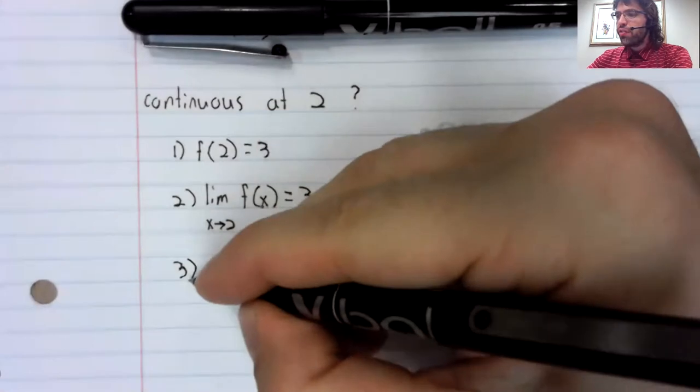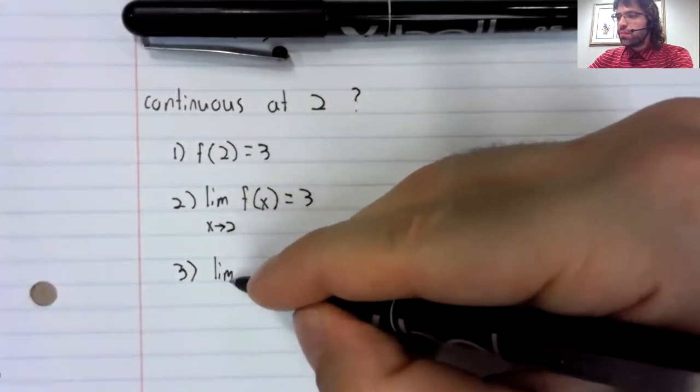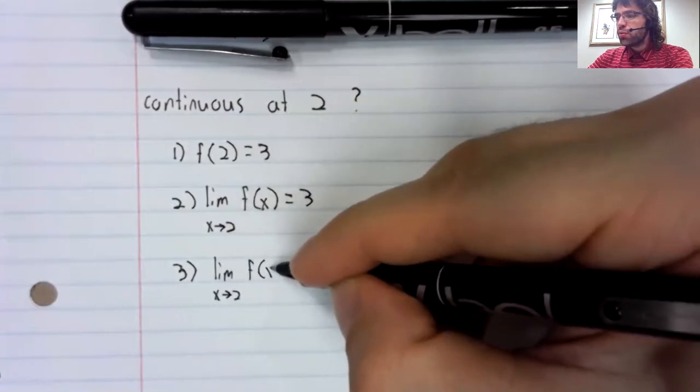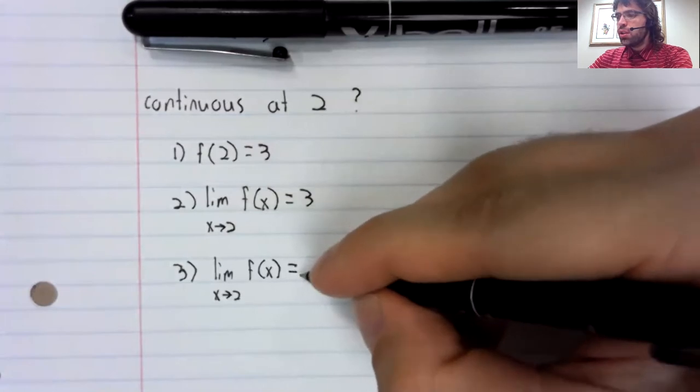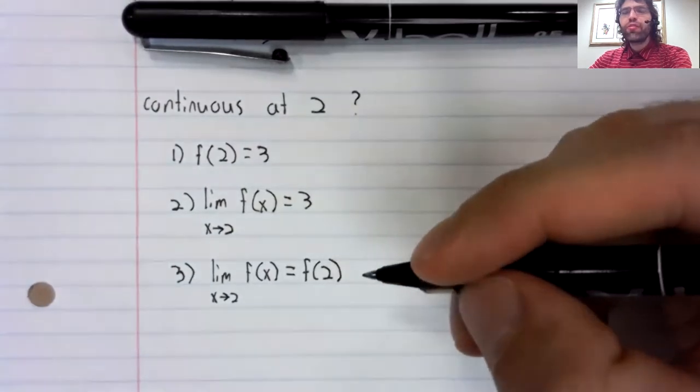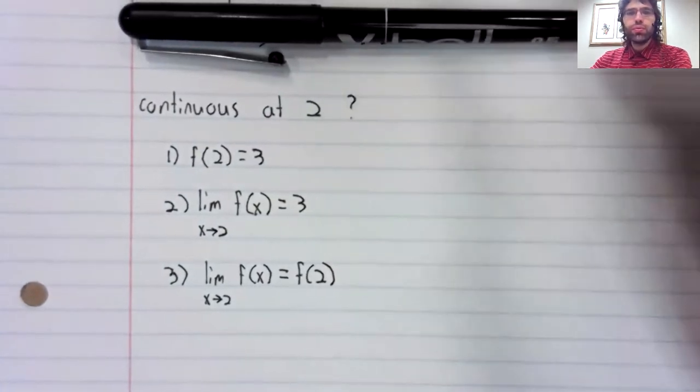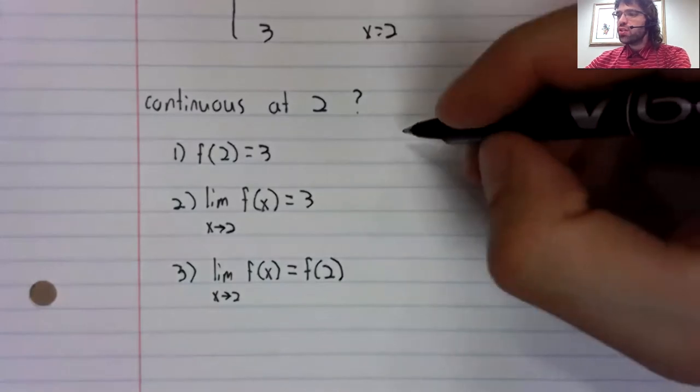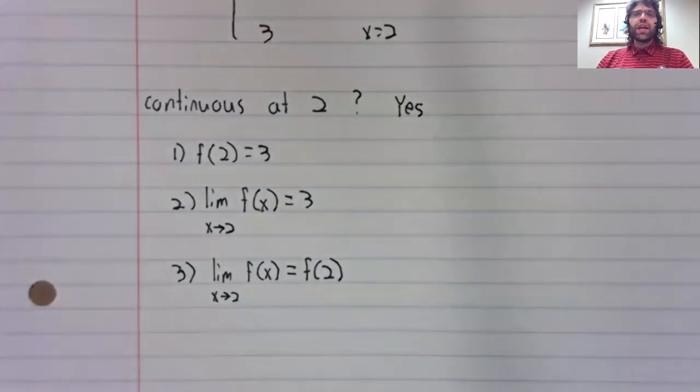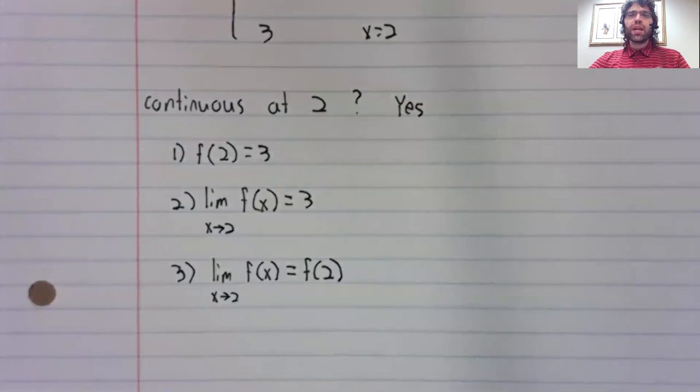And finally, the limit as x approaches two equals f of two. All three conditions are satisfied. So the answer to that question finally is yes. This function is continuous at two.